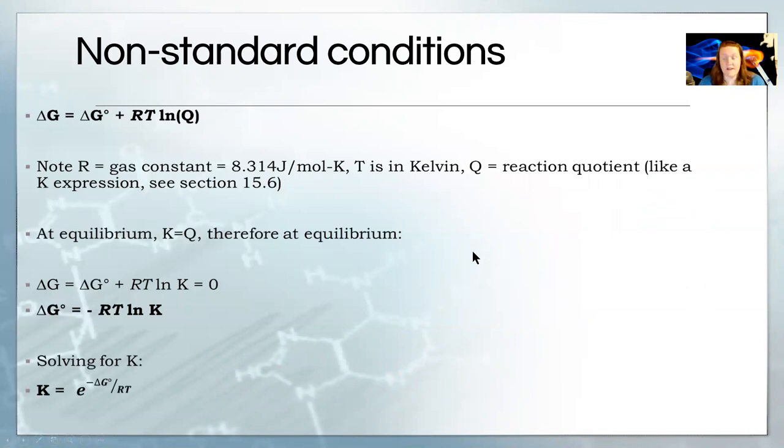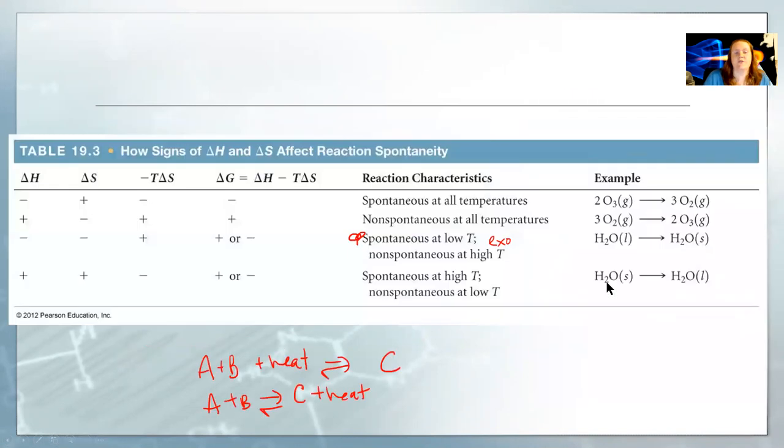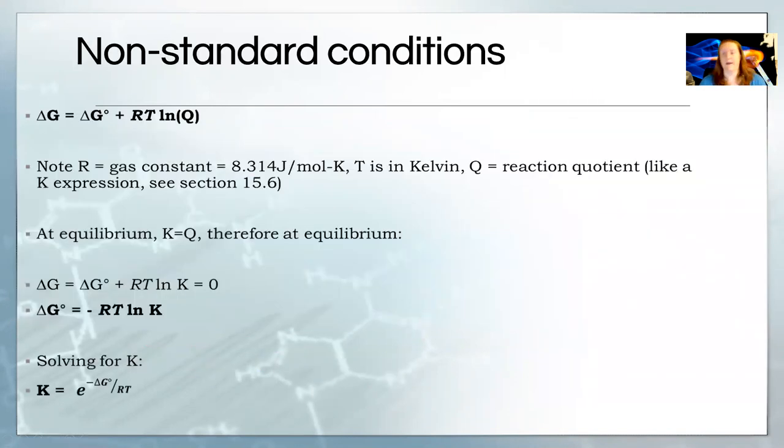Now, what if we don't have standard conditions? What if it's not 298 Kelvin? What if it's not a pure solid? Or what if it's not one atmosphere? What if any of these things aren't true? What do we do? Well, we have an equation for that. So, Gibbs free energy under non-standard. So, no little degree sign. The degree sign always means standard. So, delta G under any conditions is standard delta G plus RT ln of Q.